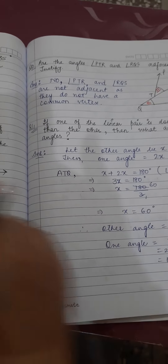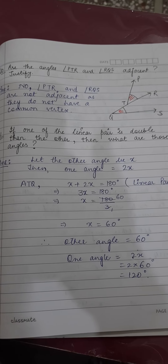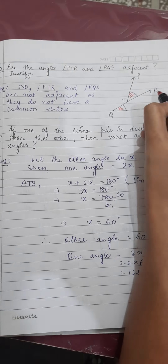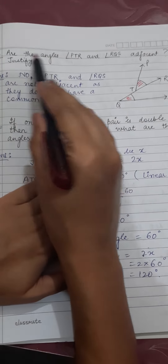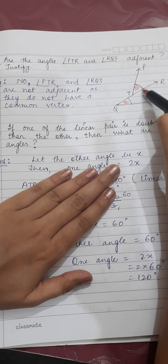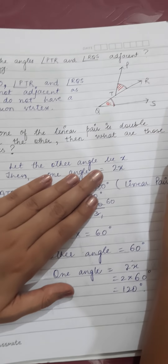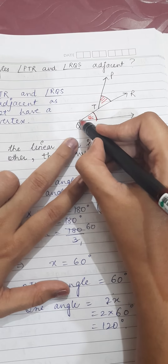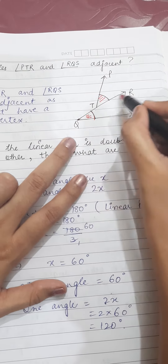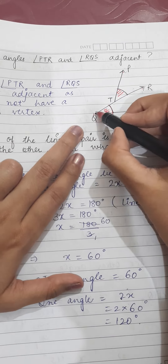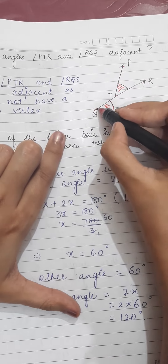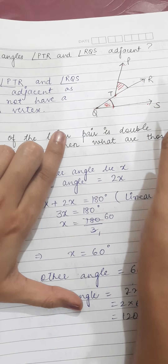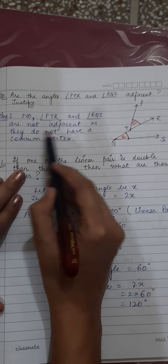Question number 10: two angles are adjacent if they have a common vertex and a common arm. The question asks whether angle PTR and angle RQS are adjacent. They are not adjacent because they don't have a common vertex — one starts from T and the other from Q. So the answer is no: angle PTR and angle RQS are not adjacent as they do not have a common vertex.